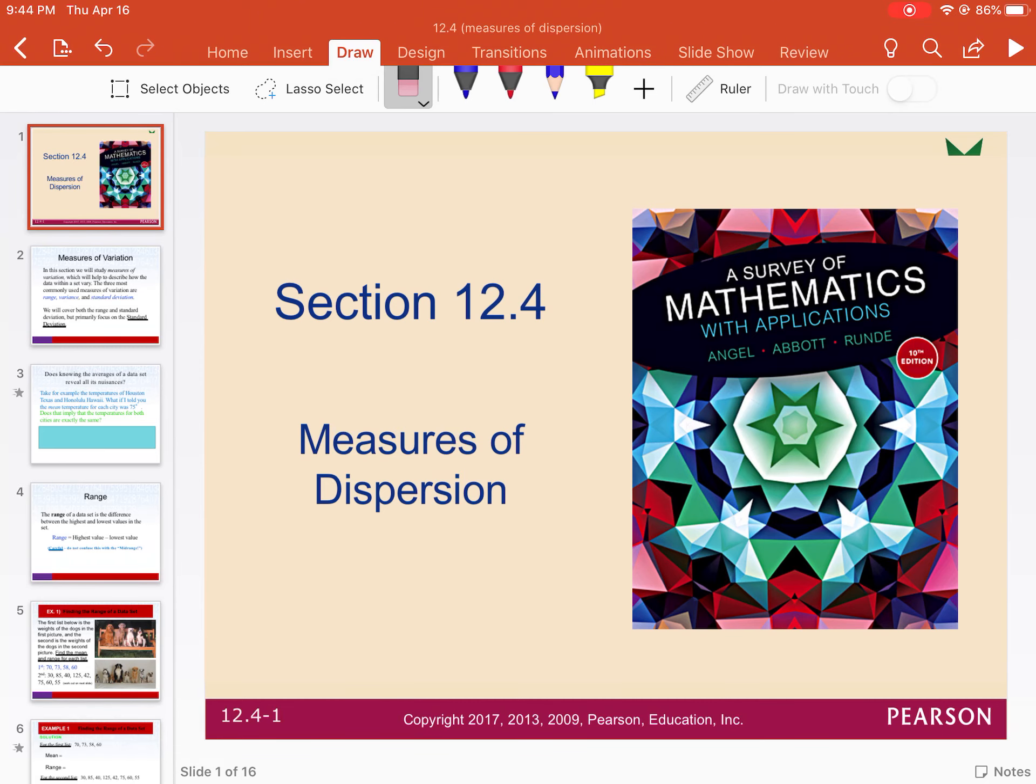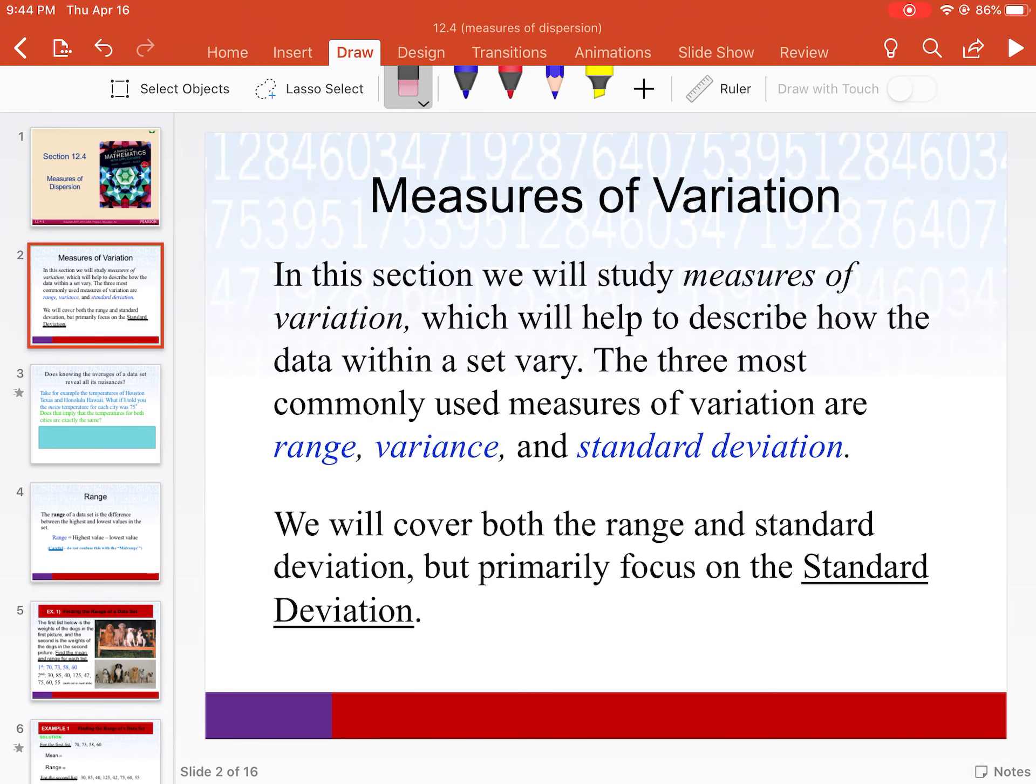We'll find out tonight that simply knowing the average of a data set is not enough. It's a good start but it's not enough information. Another measure for a data set is something we call variation.